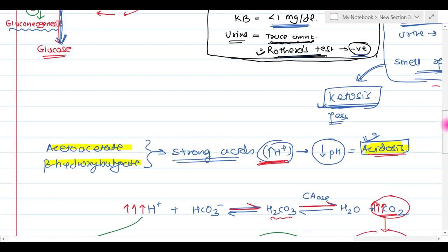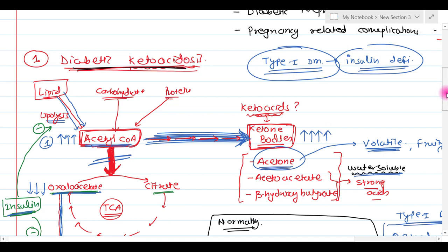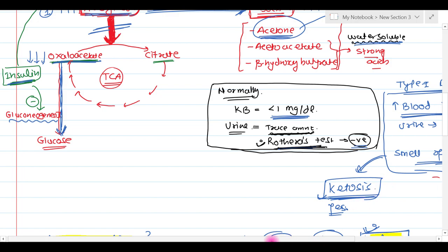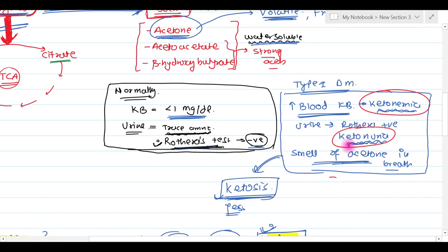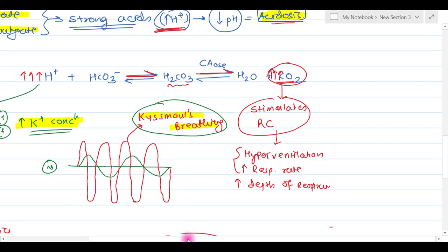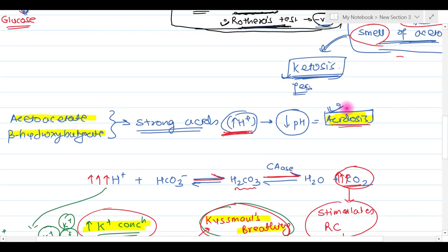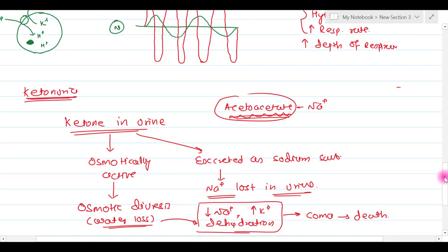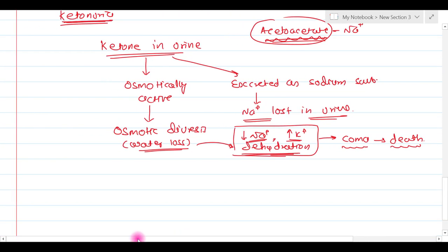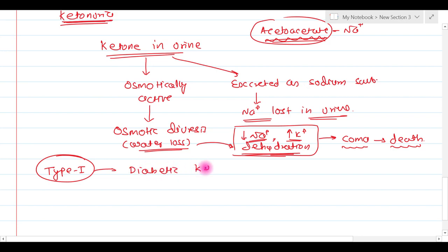To summarize diabetic ketoacidosis: there is ketonemia, ketonuria, fruity smell of acetone in the breath, Kussmaul's breathing with increased rate and depth of respiration, increased potassium concentration, metabolic acidosis, dehydration, low sodium and high potassium — which may ultimately lead to coma and death. Diabetic ketoacidosis is common in type 1 diabetes mellitus.